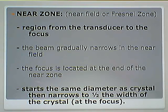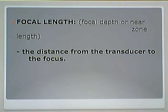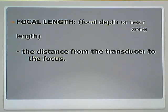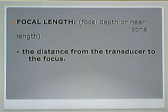The near zone starts the same diameter as the crystal, then narrows to one-half the width of the crystal at the focus. The focal length — also called the focal depth or near zone length — is a distance. It is the distance from the transducer to the focus. When asked about a distance, think length. When asked about an area, think zone.